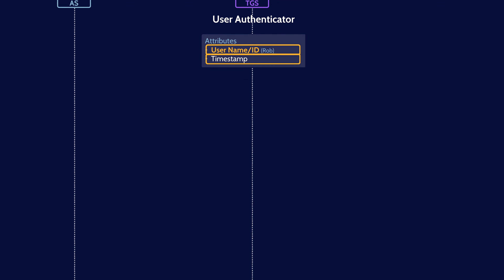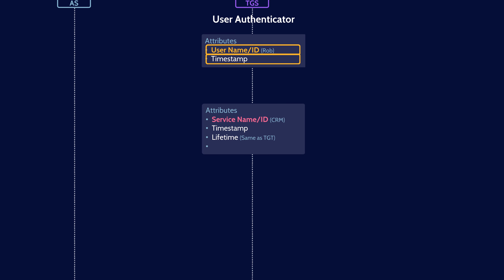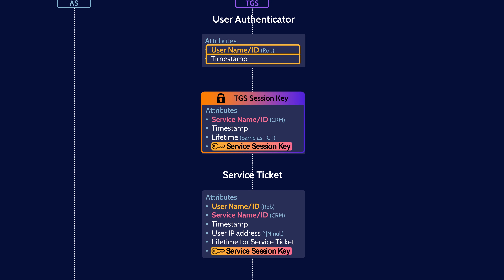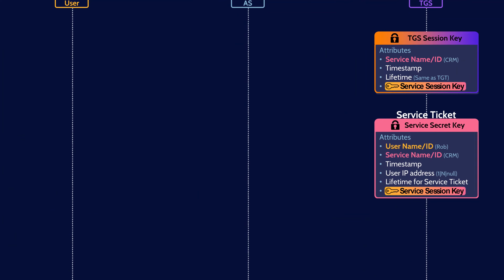The TGS now moves on to creating its own messages to the user. The first message contains the service ID of the service the user wants to access, the timestamp, and the lifetime of the message. The second message is the service ticket, containing the user ID, the service ID, the timestamp, the user's IP address, and the lifetime of the service ticket. The TGS then generates a random symmetric service session key and adds it to both messages. The first message is encrypted with the TGS session key and the service ticket is encrypted with the service secret key. These two messages are now sent to the user.